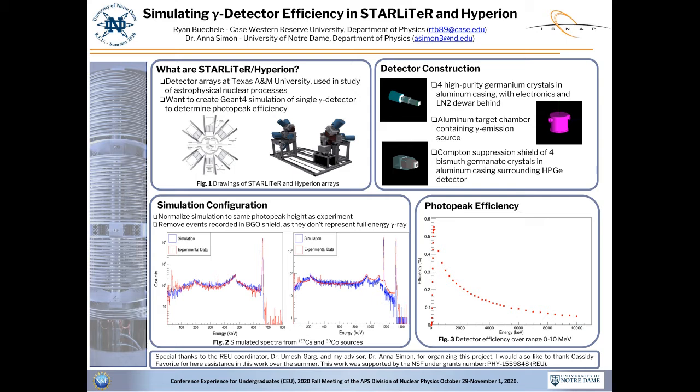A germanium clover detector consists of four high-purity germanium crystals held under vacuum in a thin aluminum casing. Electronics and a dewar of liquid nitrogen for cooling the detector are situated behind the crystals. The detector is situated in front of an aluminum target chamber, which contains the source of the gamma ray emissions. Surrounding the detector is a Compton suppression shield, which is made up of four bismuth germanate crystals in an aluminum casing.